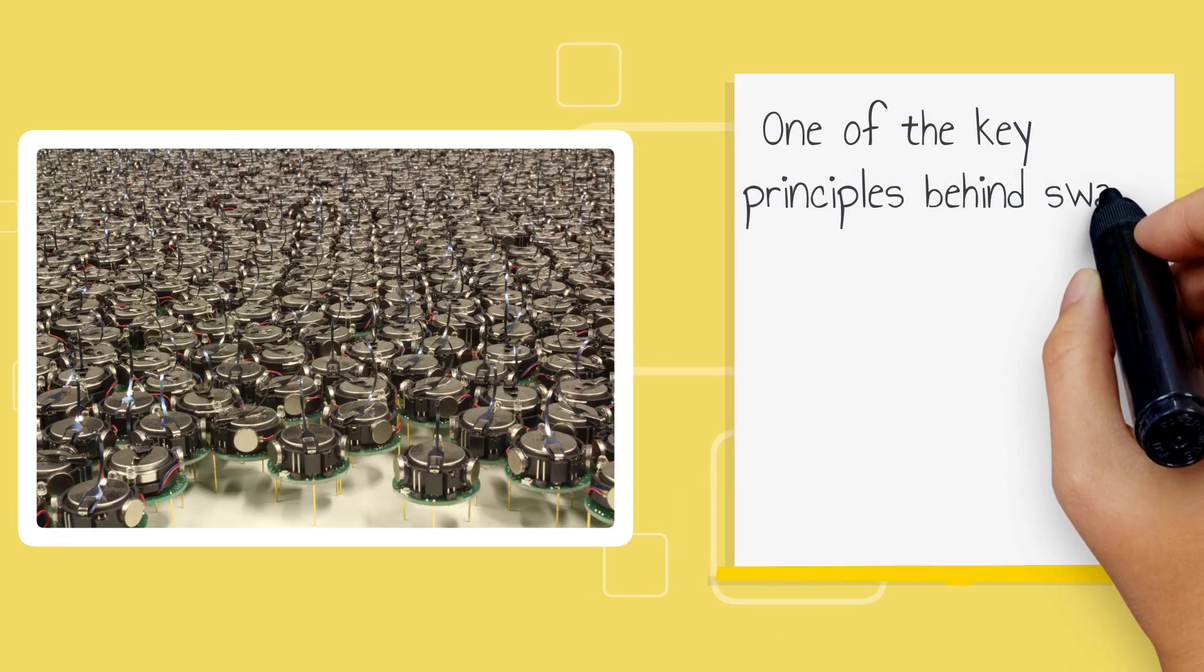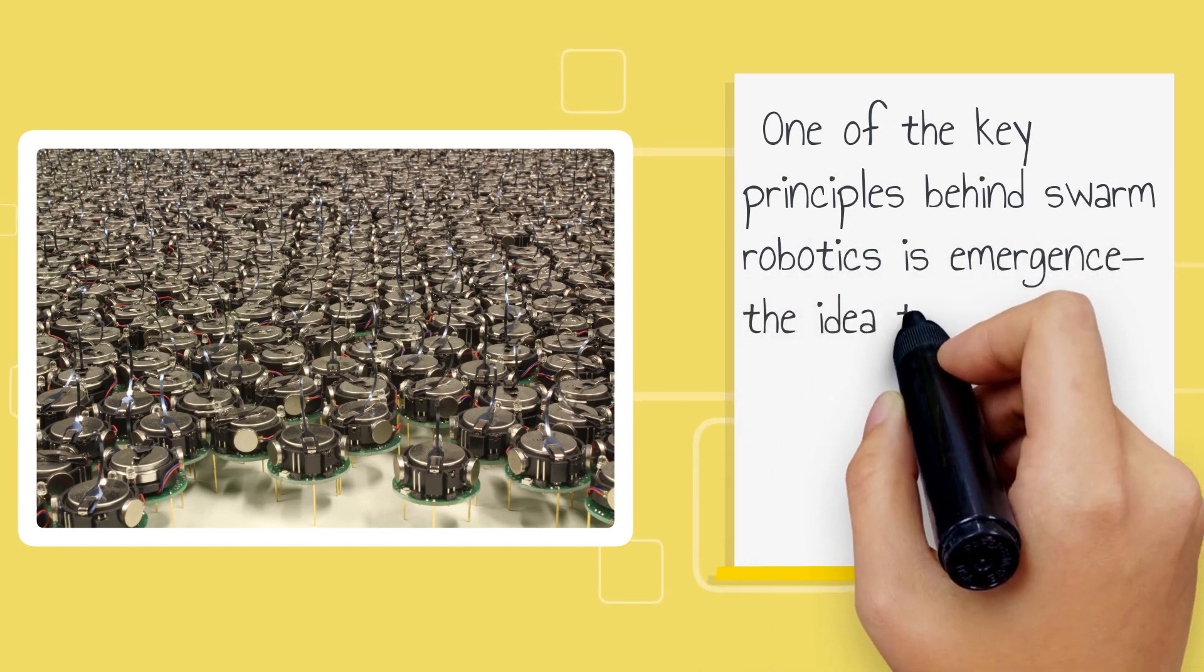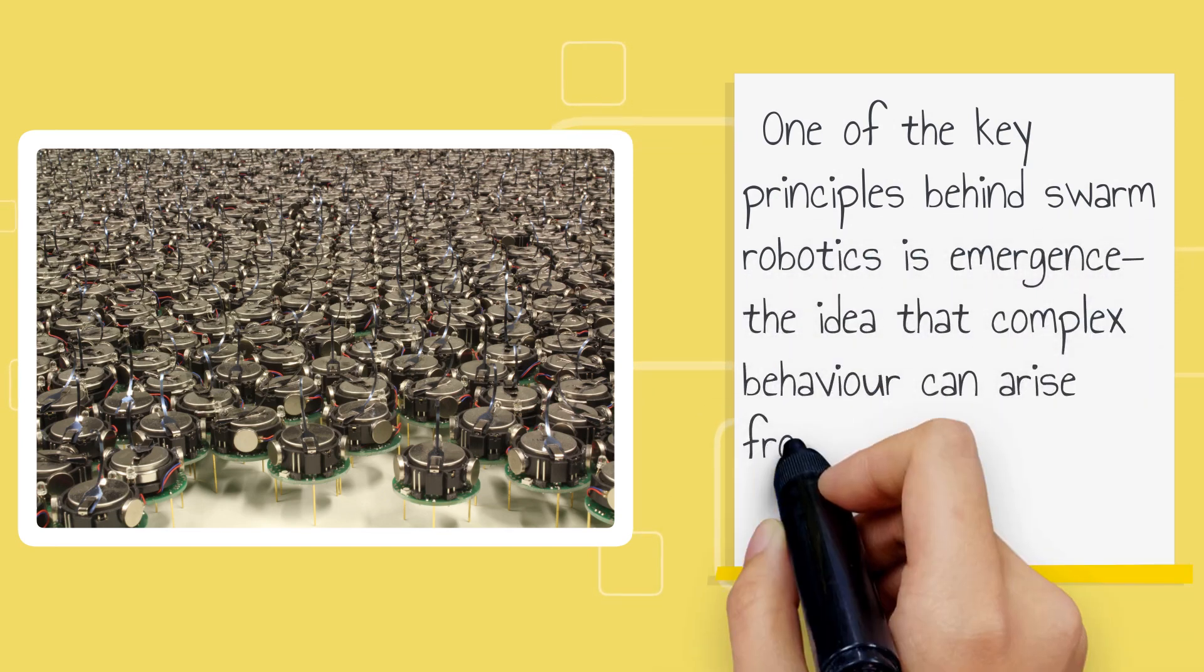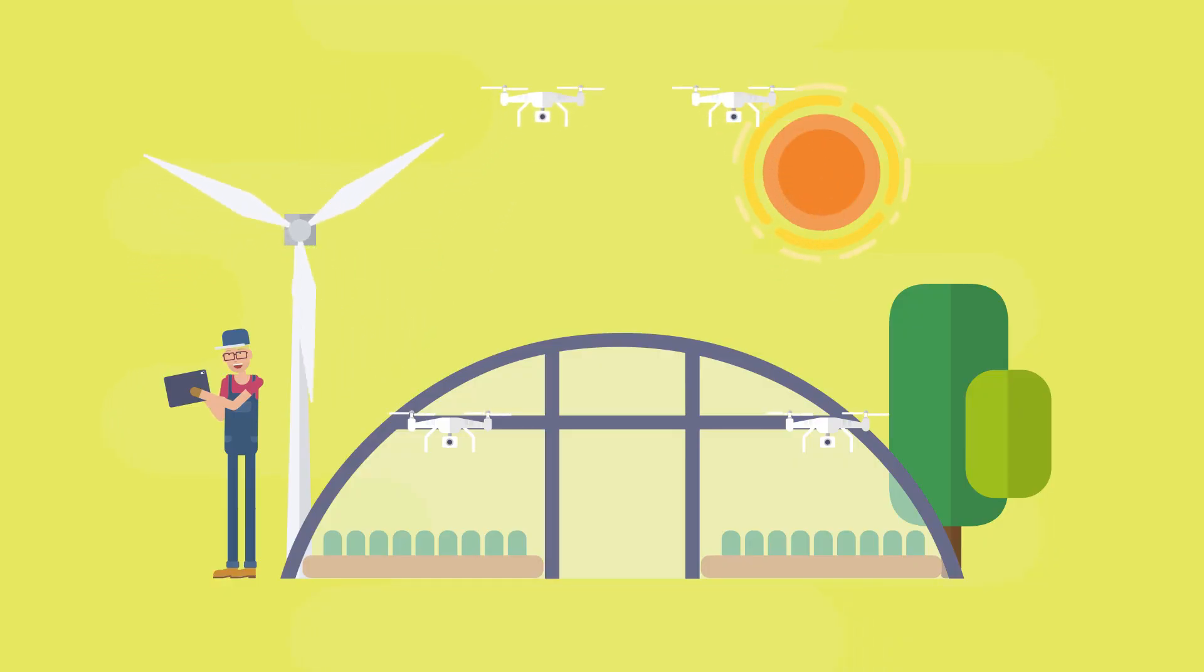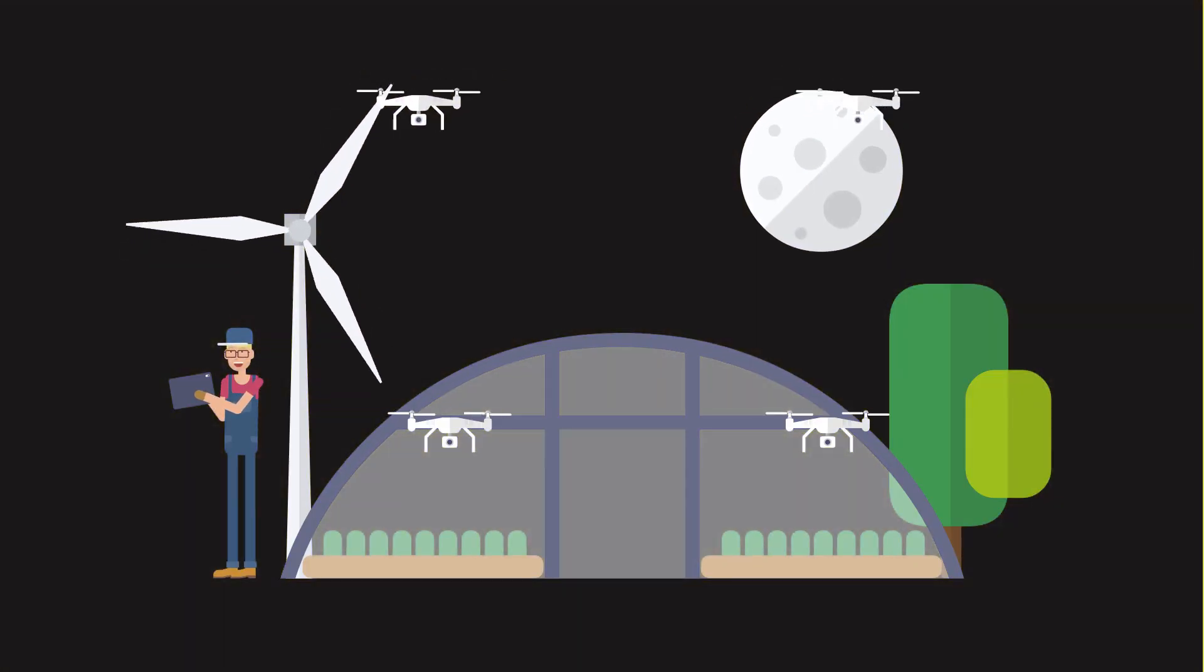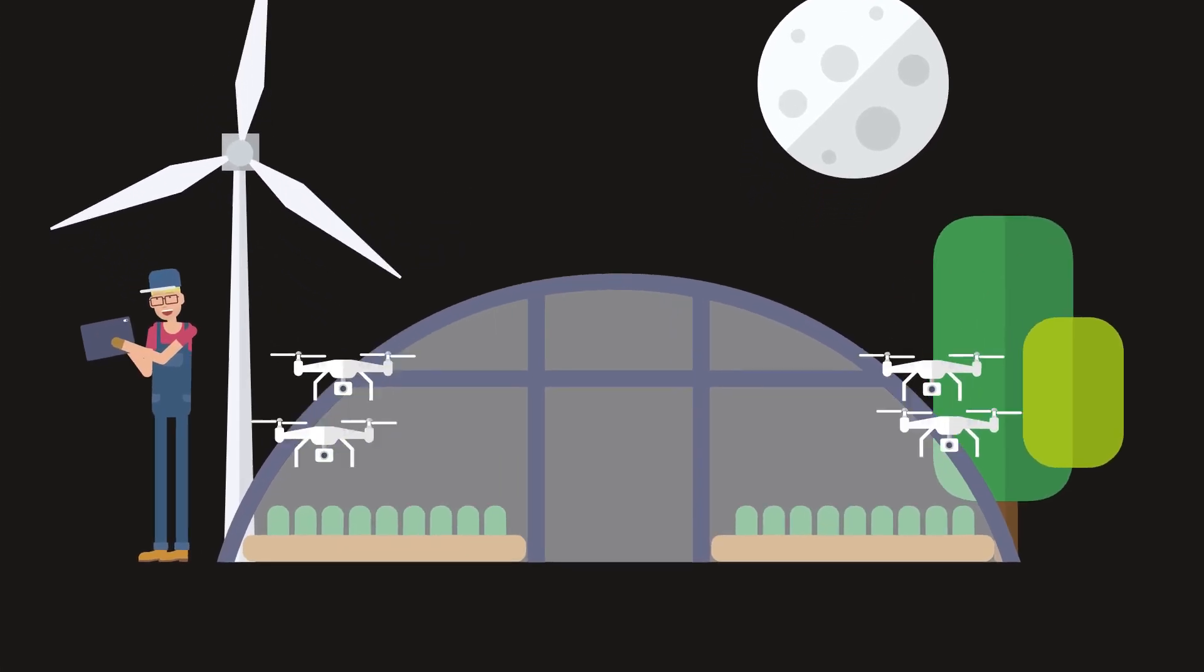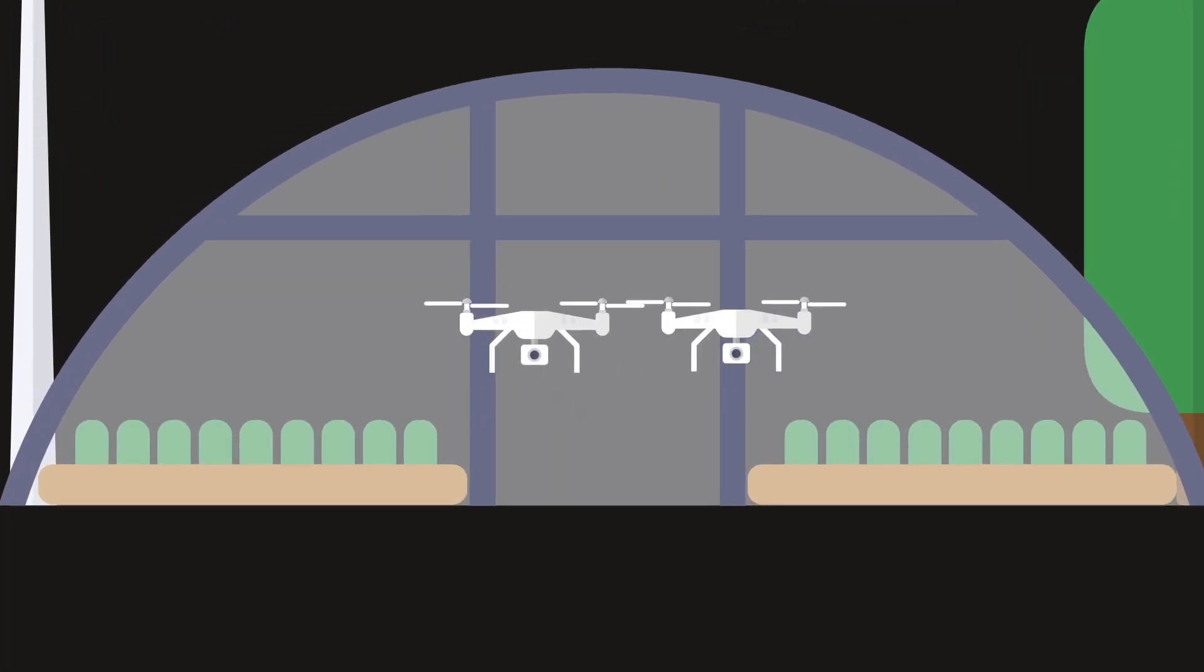One of the key principles behind swarm robotics is emergence, the idea that complex behaviors can arise from the interaction of simple agents. This allows the swarm to adapt to changing conditions and continue working towards its goal, even if some robots are lost or malfunctioning.